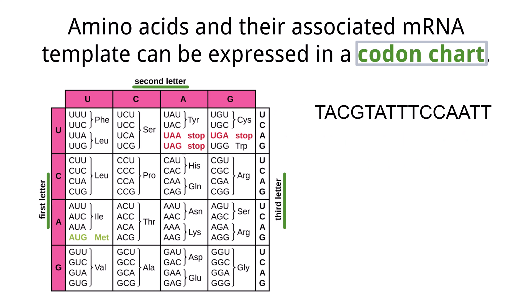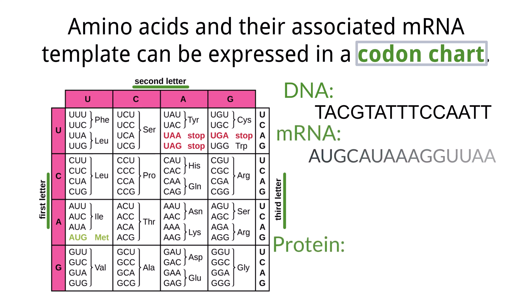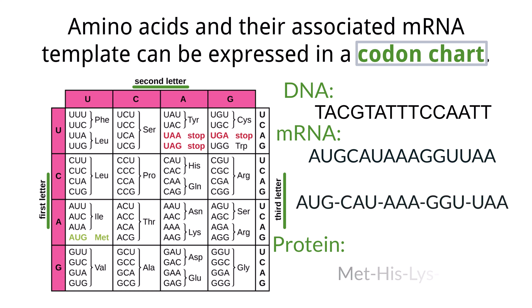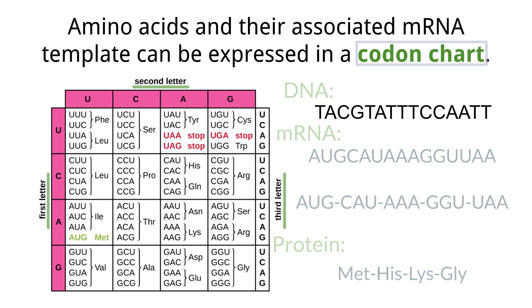First off, we can tell that this is a DNA sequence because we have thymine bases. So before we can translate the sequence, we need to transcribe it. We take each base and pair it with the messenger RNA sequence that it would create as seen here. Now with the messenger RNA, we can use the codon chart to identify each amino acid. You can see the final result here. Be ready to answer questions similar to this for the exam.